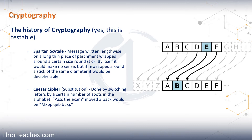We're going to start out with the Spartan Scytale. It is really just taking a piece of cloth and wrapping that cloth around a stick of a certain diameter and then writing your message. Once you're done writing the message, you remove it from the stick and then send it to the receiver. If someone else intercepts this message, they're just going to see a long piece of cloth or parchment with letters that doesn't make a lot of sense. Even if they decide to wrap that around a stick, if that stick is not the exact same diameter, it's not going to line up and they can't read the text. Here, the stick of the same diameter is the shared secret that we use for symmetric encryption.